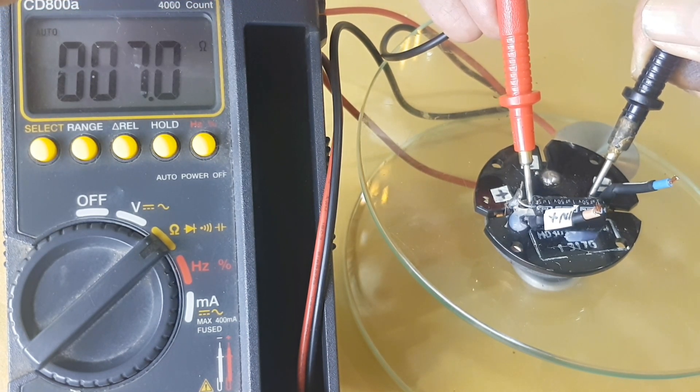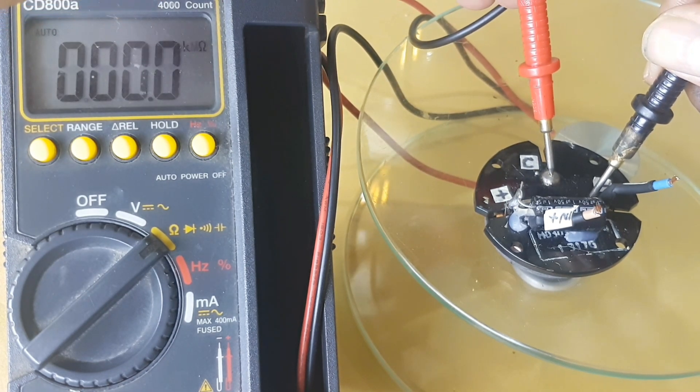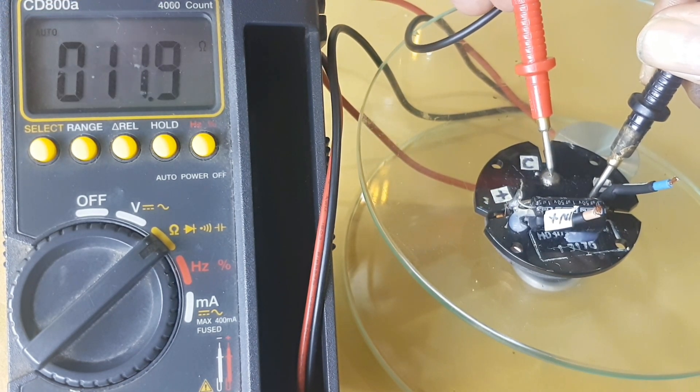Next we measure the resistance value between negative and C. The resistance value is 119.7 ohms.